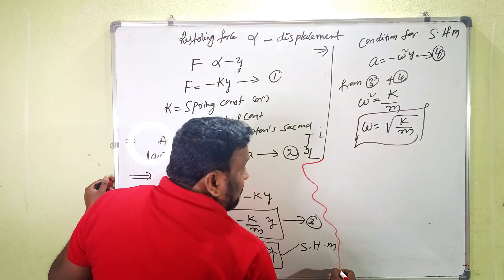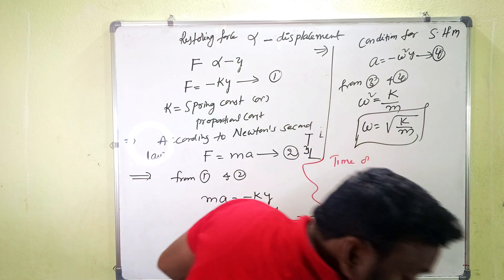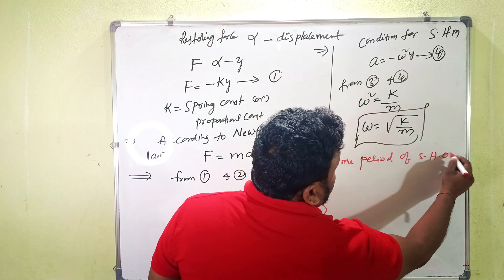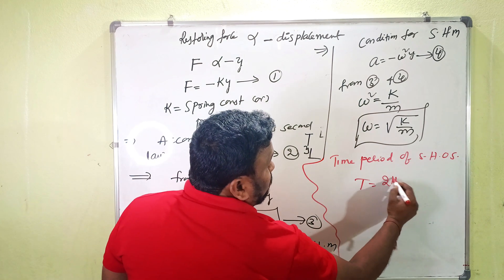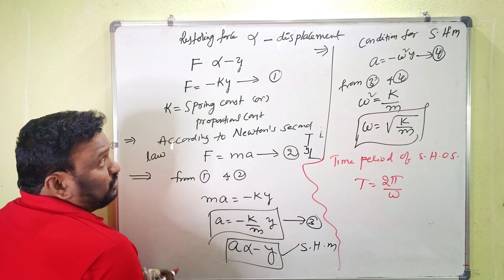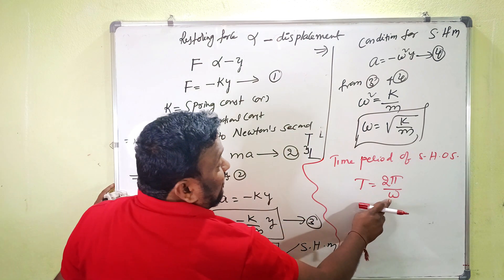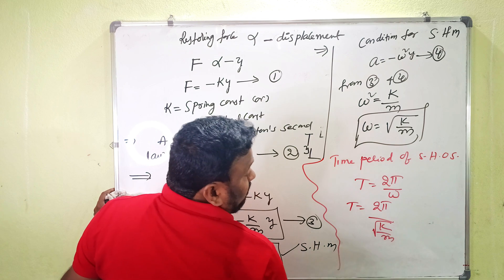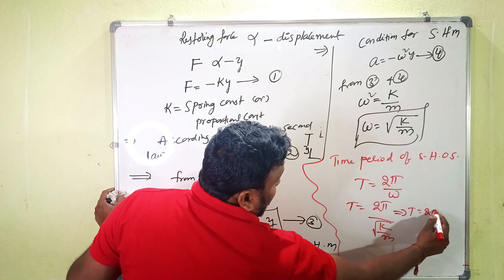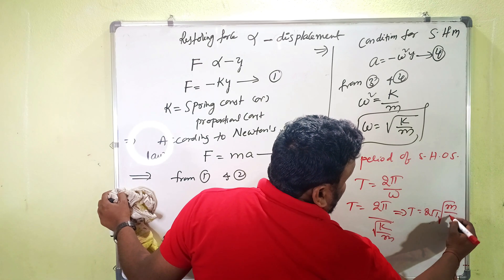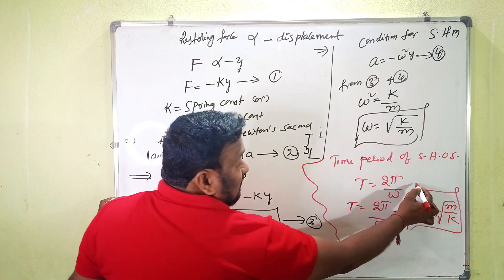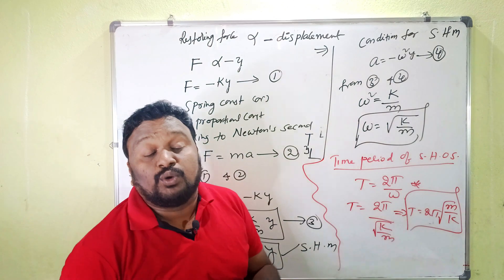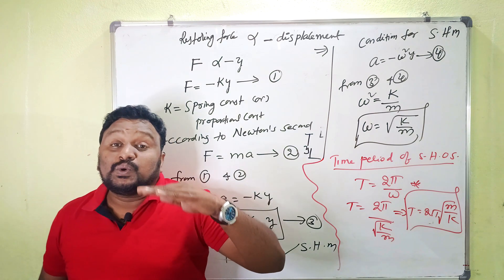We know that the time period of a simple harmonic oscillator is given by T equals 2π divided by omega. Substituting our value of omega, T equals 2π divided by the square root of k/m, which gives T equals 2π times the square root of m/k. This is the expression for the time period of the loaded spring. Time period is the time taken to complete one oscillation.